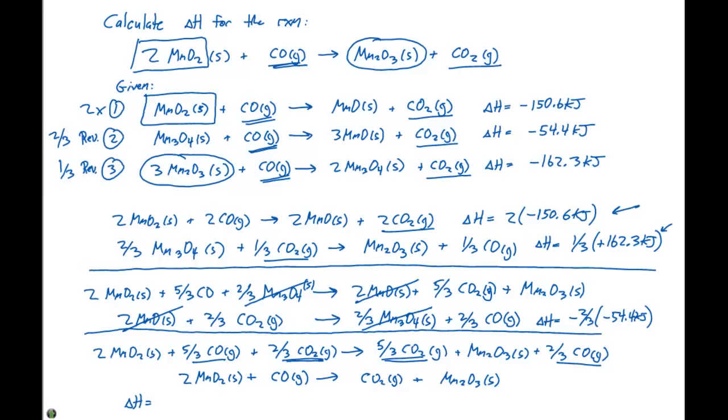Here, we have to make sure that we calculate delta H properly. So that delta H is going to be two times negative 150.6 kilojoules, because that's two times reaction number one, plus one-third times positive 162.3 kilojoules, because that's reaction number three reversed, which changes its sign, then multiply by a coefficient of one-third, plus two-thirds times positive 54.4 kilojoules, which we take the second reaction, reverse it, and multiply by two-thirds. When we do the math for all of this, we end up with negative 210.8 kilojoules.